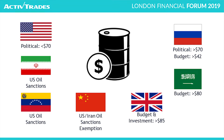Venezuela is relatively unstable. Most of the Western world recognizes the leader of the opposition as the rightful president. There are now sanctions on Venezuela which again lower supply. With stable demand and lowering supply, we end up with rising prices.